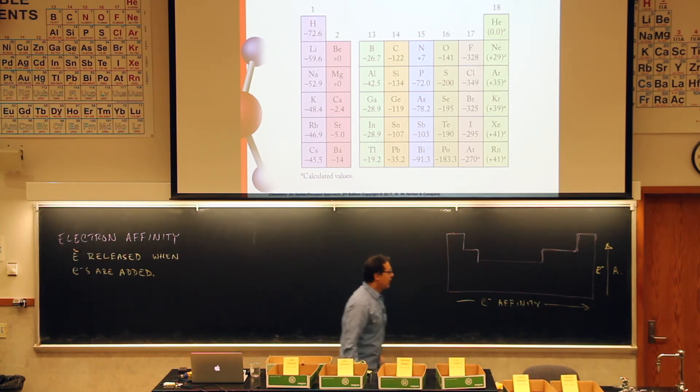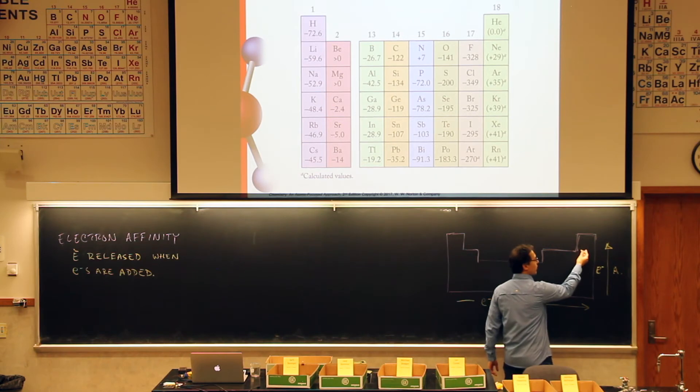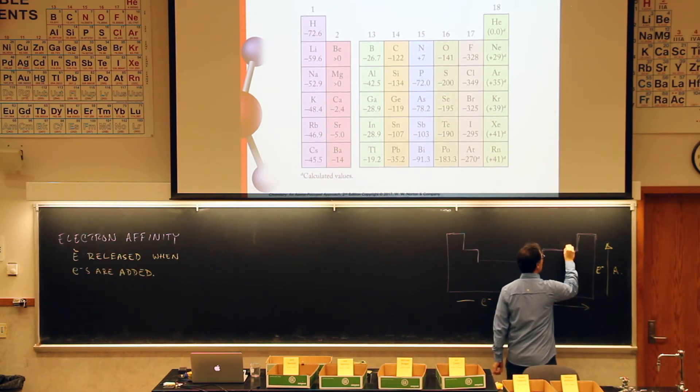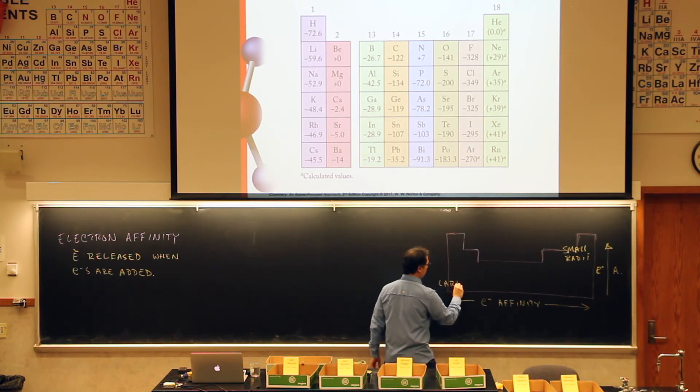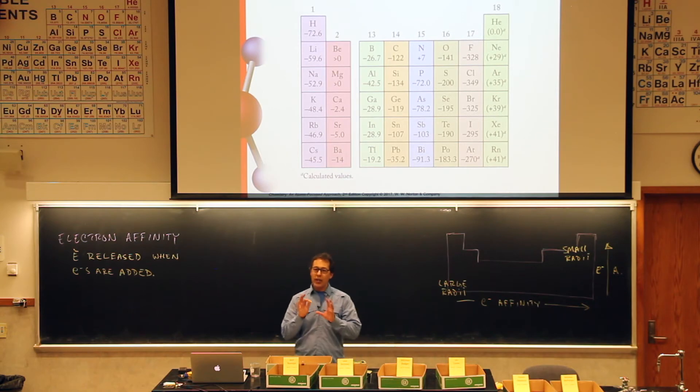We also know that generally speaking, the atoms over here, are they big or small? They're small, right? So I'm just going to say small radii. And then down here in this corner we have large radii. So it seems as though the smaller the atom is, generally speaking, the more that atom will grab onto electrons. It's almost as if the electrons are getting closer to the nucleus, the more they want to get pulled into the nucleus, like they're getting closer to the edge of that black hole.